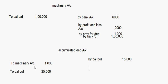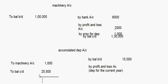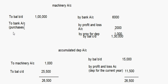The balancing figure in the accumulated depreciation account will be by profit and loss account for the current year's depreciation. That comes to 26,500 minus 15,000 = 11,500. Now in the machinery account, the balancing figure on this side represents purchases. Totalling: 1,30,000 + 6,000 + 2,000 + 1,000 = 1,39,000, so purchases of machinery = 39,000.